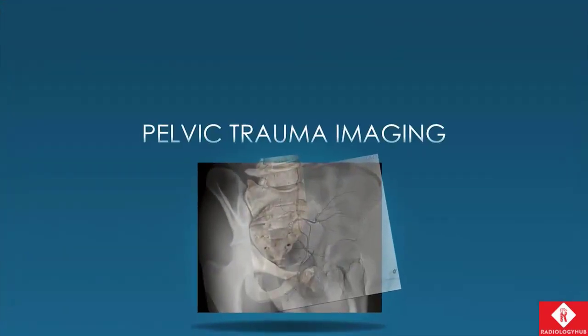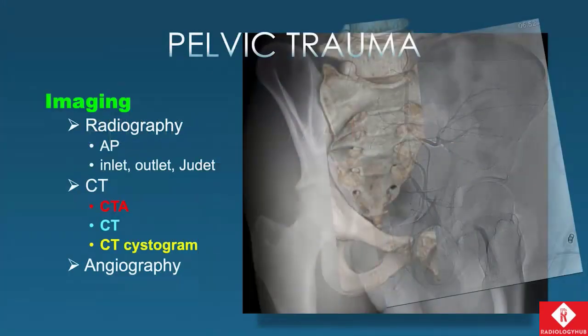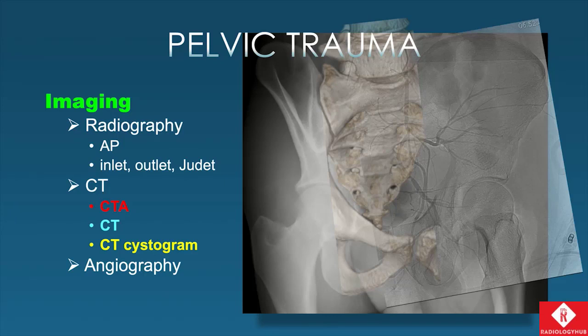Let's talk about imaging these trauma patients. We begin with radiography, particularly the AP view. Other views available but not done in the trauma bay include the inlet, the outlet, and the oblique views referred to as Judet views. We also have CT, which can be done as a CT angiogram when there's concern for bleeding, a routine CT integrated in your trauma scan that may be more venous phase, and a CT cystogram to specifically evaluate the bladder. And then we have angiography.